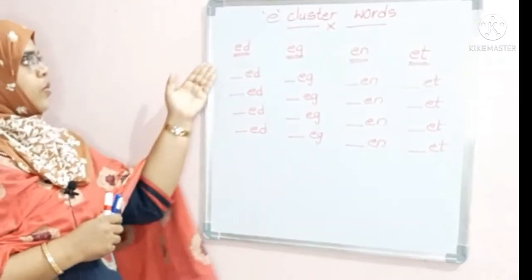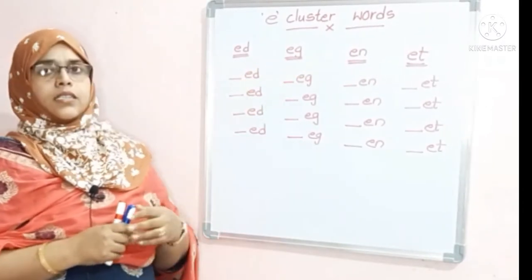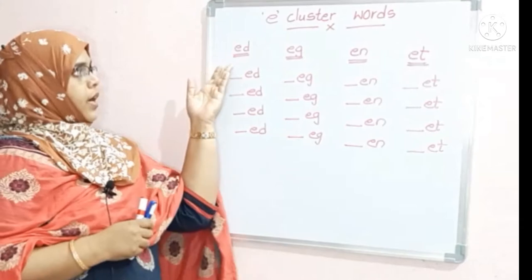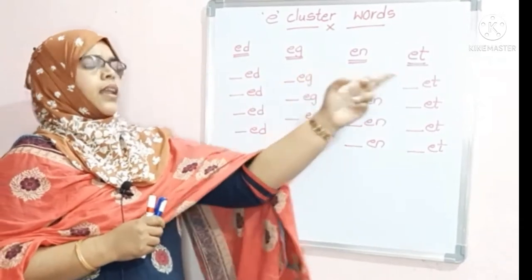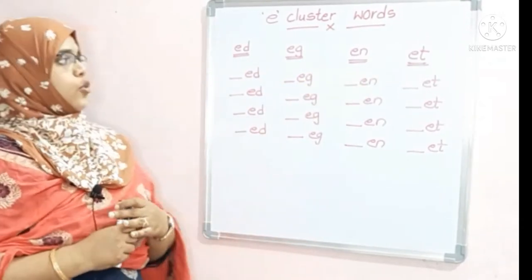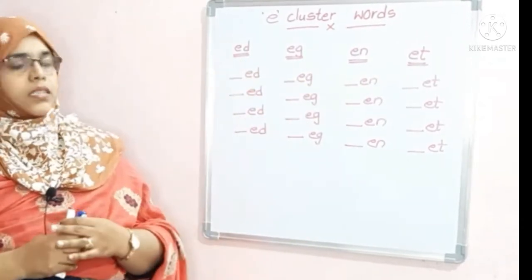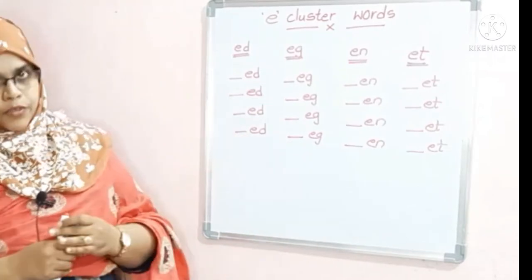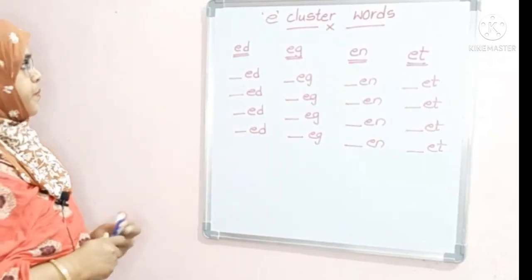So we have different clusters using vowel E: E, G, N, E. By using these clusters we will be forming different words. Let me show you.